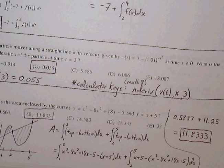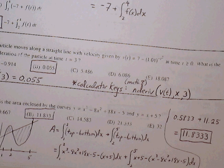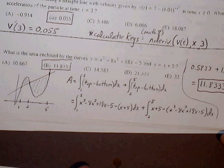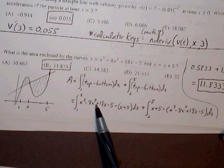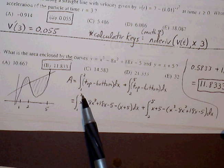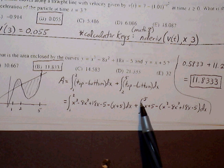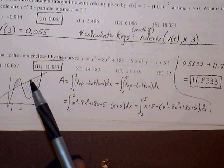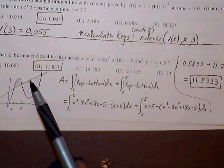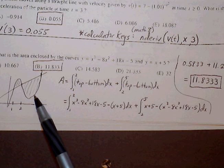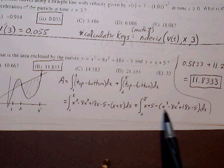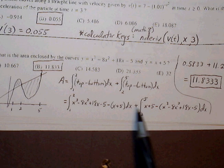And so once we do that, we have the top bound being the curve from one to two and the bottom graph being the line. So top graph minus bottom graph from one to two. And then separately, we need to have a definite integral from two to five. And you see that now the top graph is going to be the linear graph. So x plus five minus the bottom graph, which is now the cubic function. So we can plug all this in the calculator.